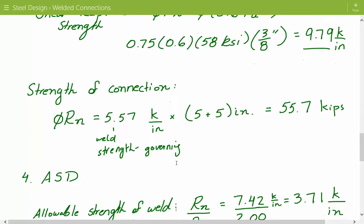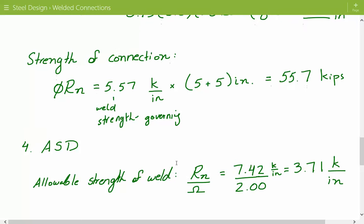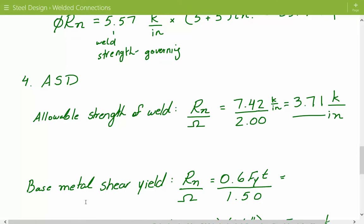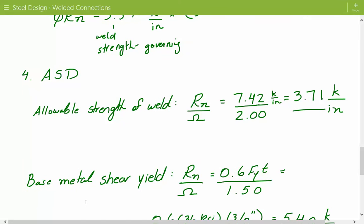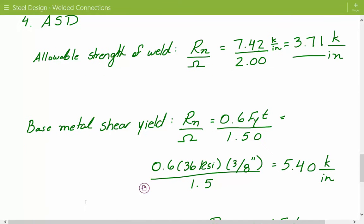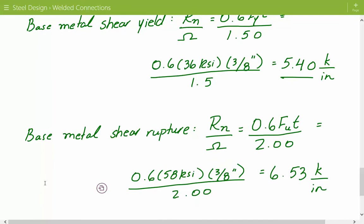For ASD, instead of multiplying by a resistance factor, we divide by a safety factor. The nominal load capacity of 7.42 kips per inch divided by safety factor 2.0 gives an allowable weld strength of 3.71 kips per inch. For base metal shear yield: 0.6 times 36 KSI times three-eighths inch divided by 1.5 equals 5.40 kips per inch. For base metal shear rupture: 0.6 times 58 KSI times three-eighths inch divided by 2.0 equals 6.53 kips per inch.